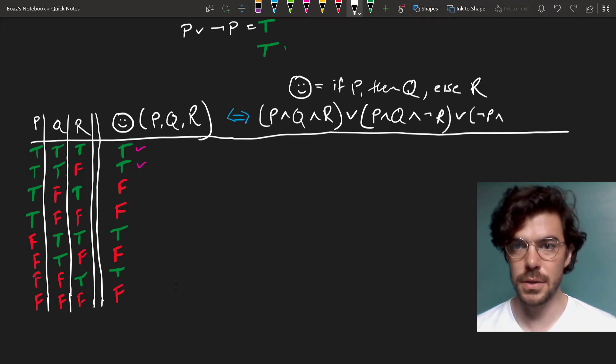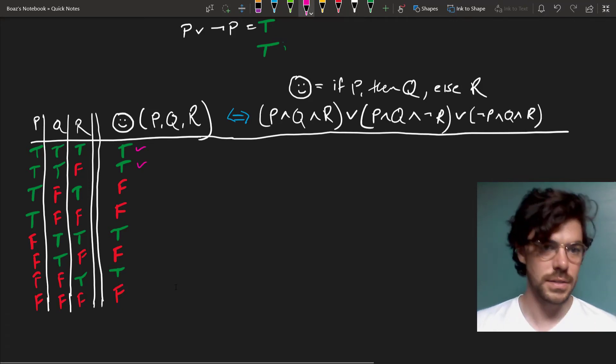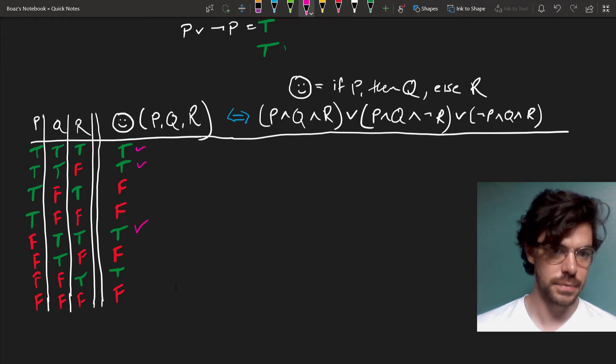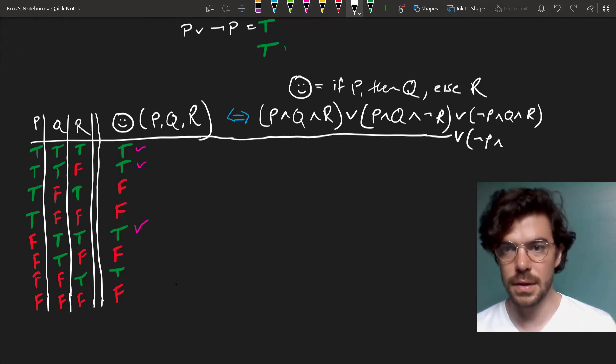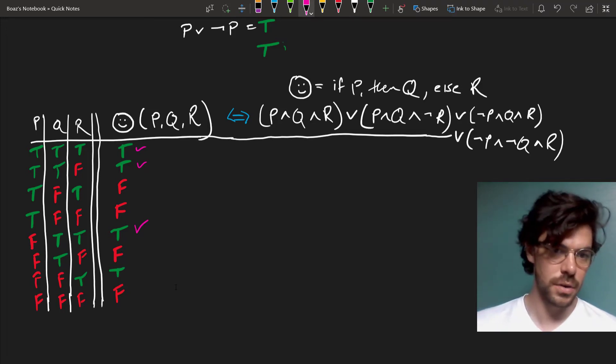or NOT P and Q and R, which gets us our fifth row, down here, or NOT P and NOT Q and R, which gets us our seventh row right here. And the rest of these will come out false.